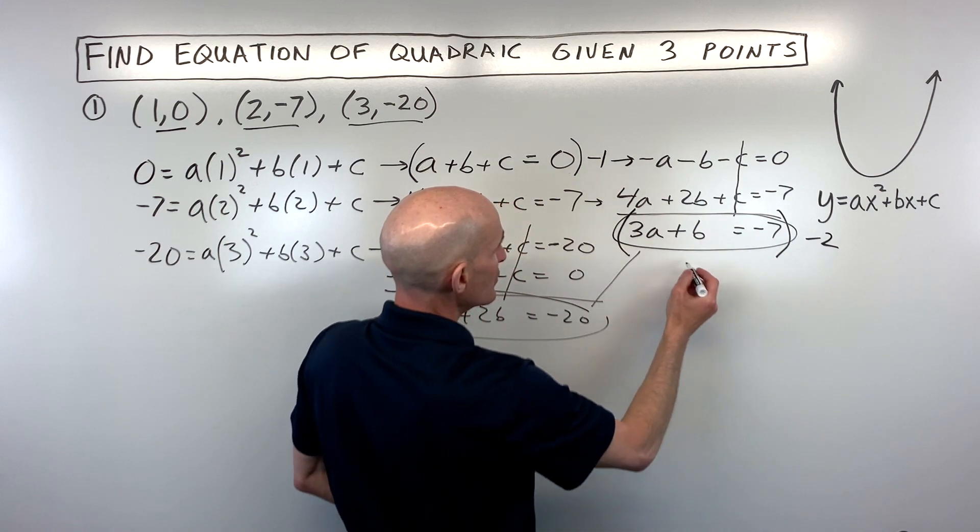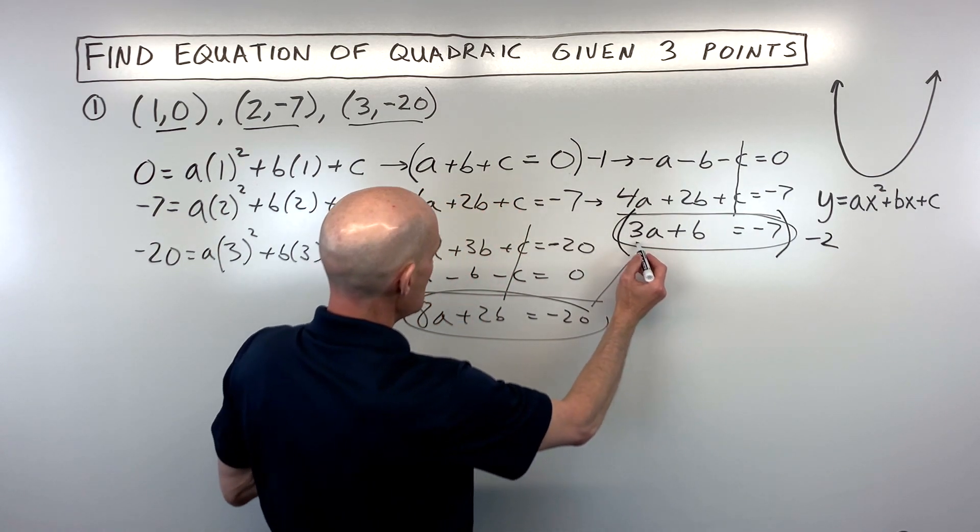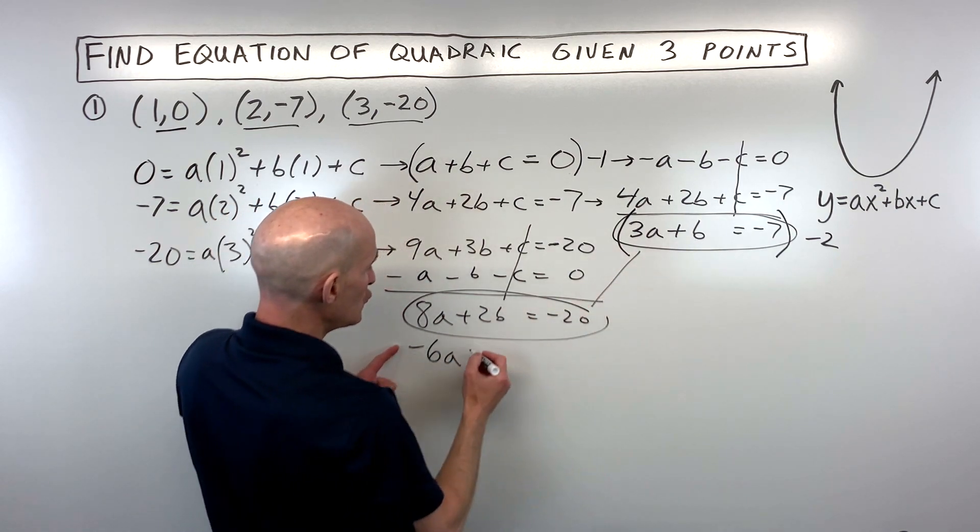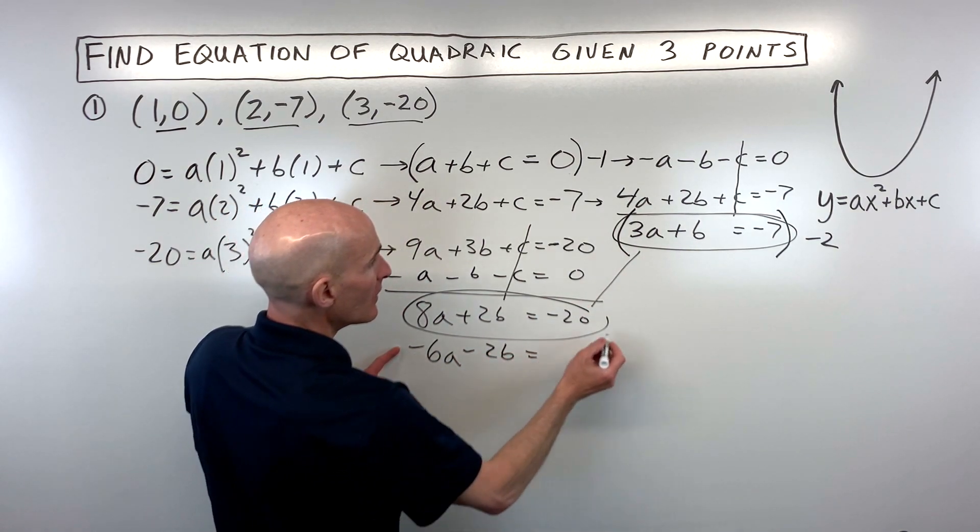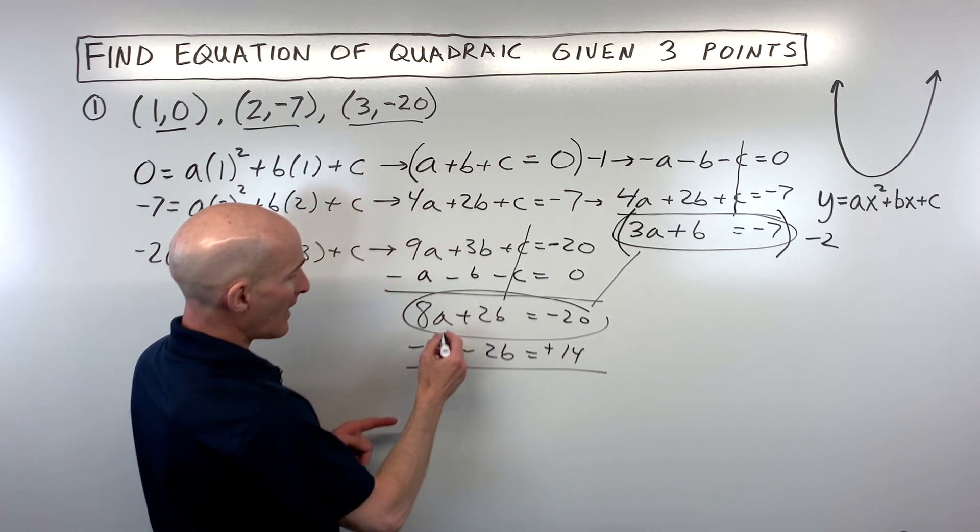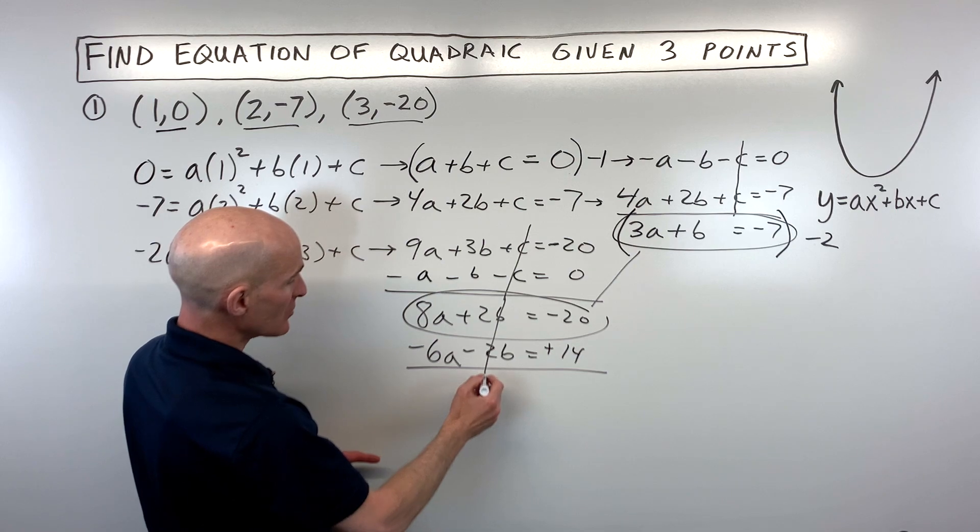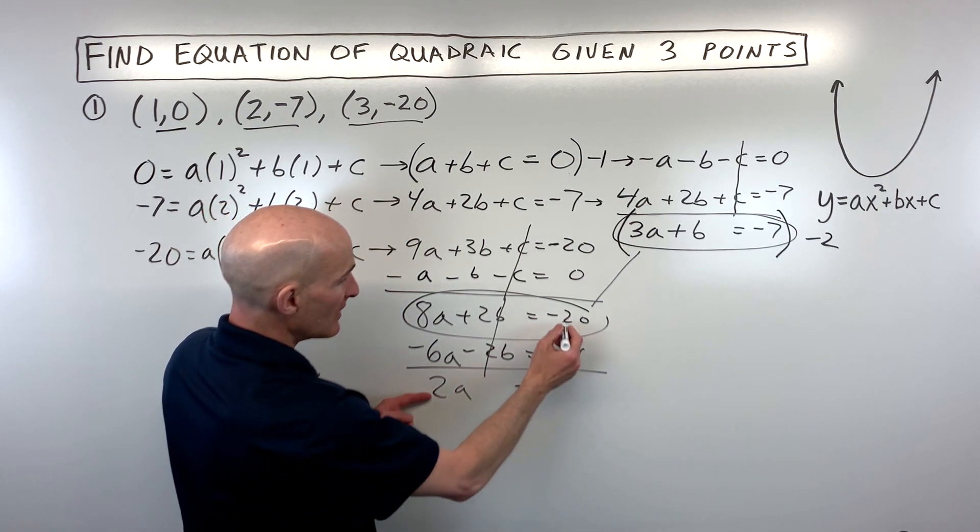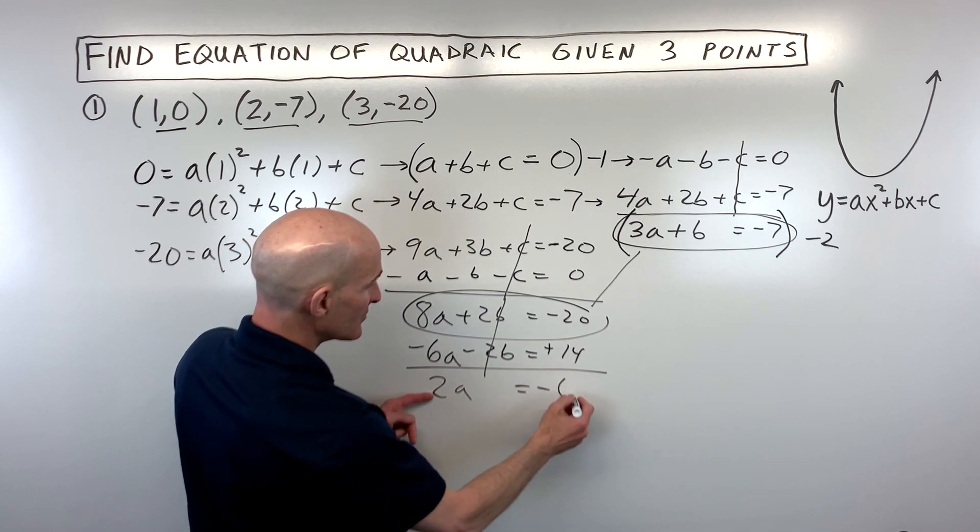So if we do that and distribute negative 2 in here, that's going to give us negative 6a, negative 2b, and negative 2 times negative 7 is positive 14. So now when we add these two equations together, you can see the b's are canceling. We're getting 8a minus 6a is 2a, negative 20 plus 14 is negative 6.